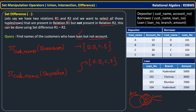We need only the loan customer names — whoever has a loan but not an account. That is why we apply the set difference operator, minus, on these two relations. D is in the borrower result but not in the depositor result, so D must be in the output. B and C are common to both, so they are skipped. E is not in the depositor result, so E is returned. The final output is D and E.